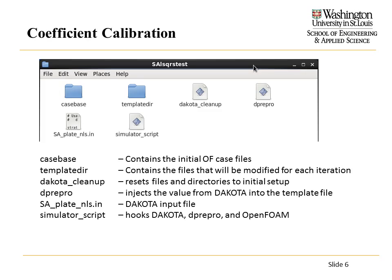Here's what a DAKOTA case looks like. This is a least-squares coefficient calibration case. There are two folders: CaseBase has all the OpenFOAM case files set up — time zero, the mesh information, the discretization schemes — it's all there. The template directory has a dummy file.